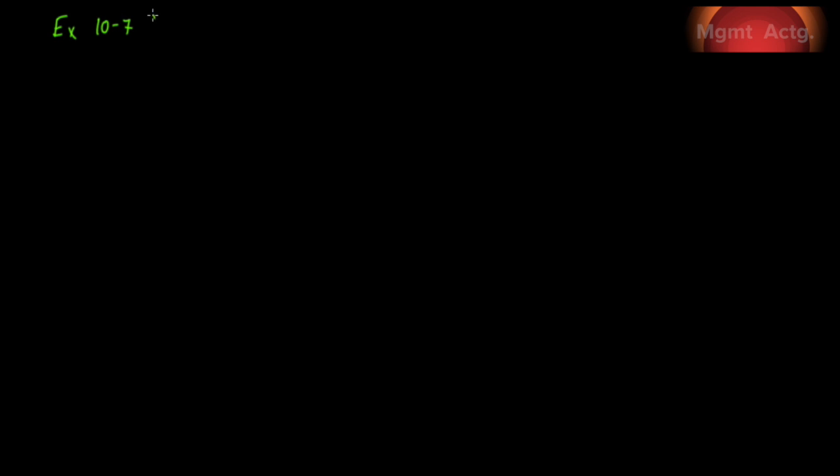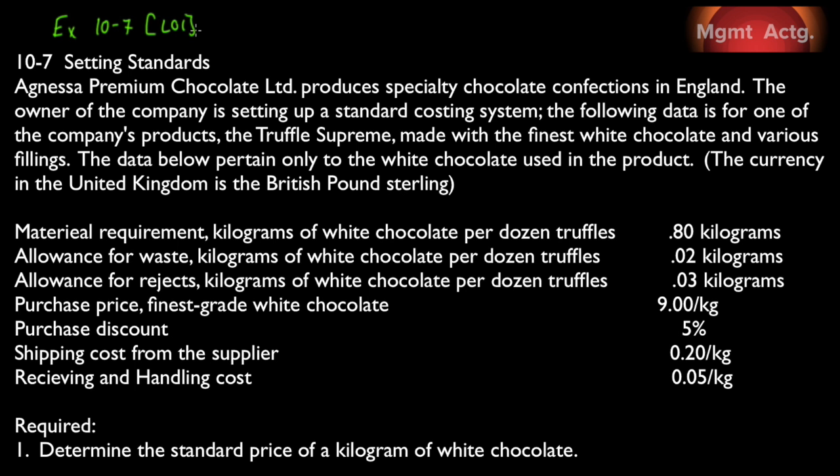Exercise 10-7 brings us all the way back to learning objective number one. Setting standards. Agniza Premium Chocolate produces specialty chocolate confections in England. The owner of the company is setting up a standard costing system. The following data is for one of the company's products, the Truffle Supreme, made with the finest white chocolate and various fillings. The data below pertain only to the white chocolate used in the product. Required number one, determine the standard price of a kilogram of white chocolate.